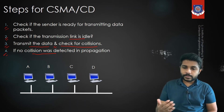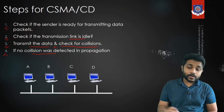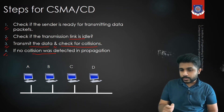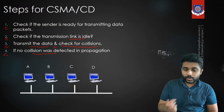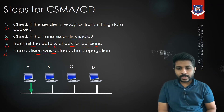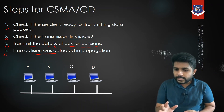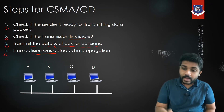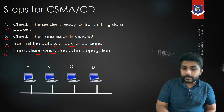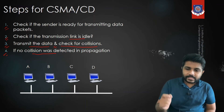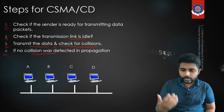You might still be confused about how the sender knows there is a collision. Let's see how the sender detects a collision. Consider four devices A, B, C, and D connected via bus topology.